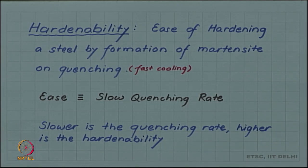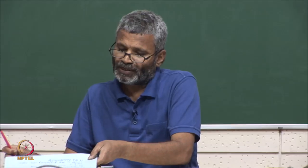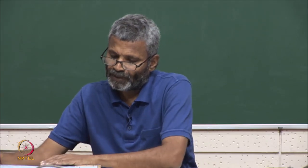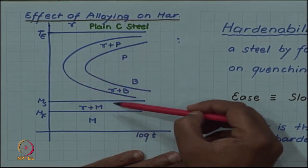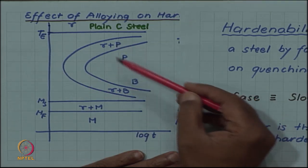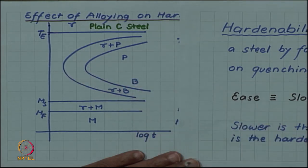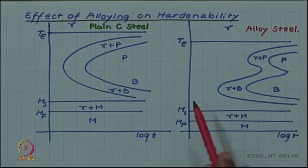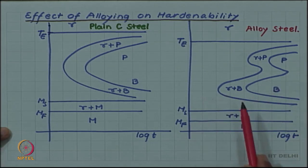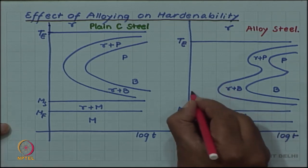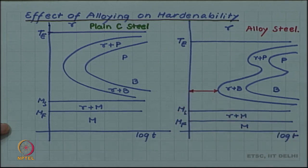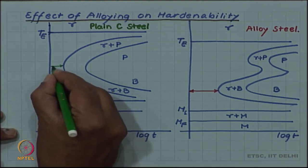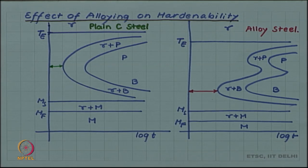We have seen, while discussing the effect of alloying addition on the TTT diagram, that in plain carbon steel we have a single nose where the pearlite and bainite C curves merge. Whereas in alloy steel the C curve bifurcates into two noses — the pearlite nose and the bainite nose — and the C curve also shifts to the right, that is to higher time, which means there is a higher time window available for quenching in alloy steel than in plain carbon steel.